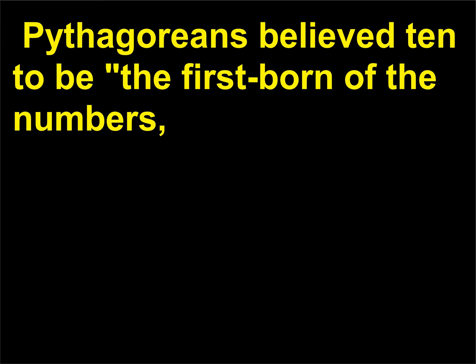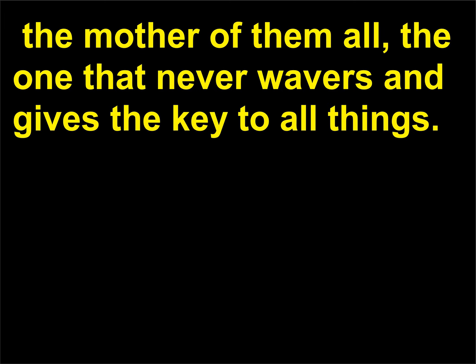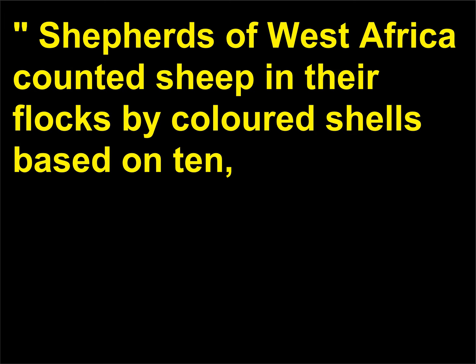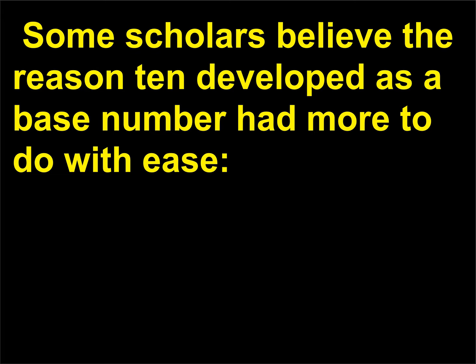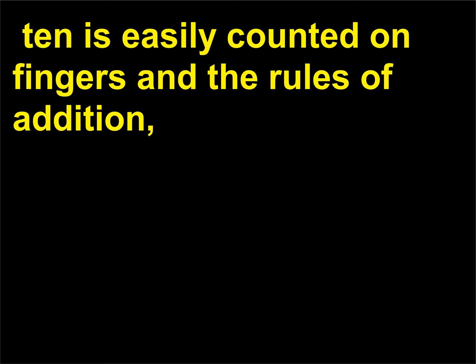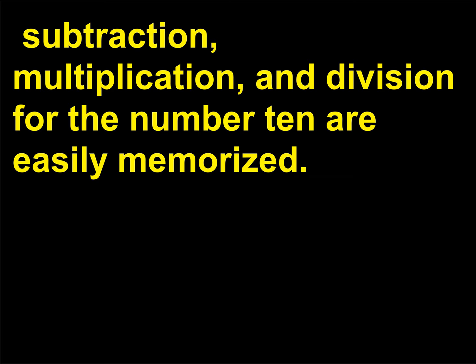Pythagoreans believed 10 to be the firstborn of the numbers, the mother of them all, the one that never wavers and gives the key to all things. Shepherds of West Africa counted sheep in their flocks by colored shells based on 10, and 10 had evolved as a base of most numbering schemes. Some scholars believe the reason 10 developed as a base number had more to do with ease — 10 is easily counted on fingers, and the rules of addition, subtraction, multiplication, and division for the number 10 are easily memorized.